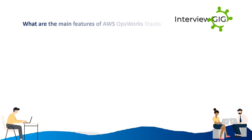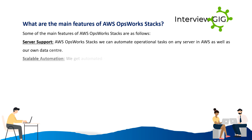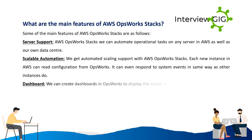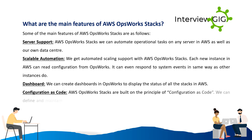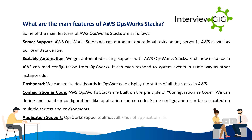Main features of AWS OpsWorks Stacks include: Server Support — automate operational tasks on any server in AWS or your own data center. Scalable Automation — automated scaling support where each new instance reads configuration from OpsWorks and responds to system events. Dashboard — create dashboards to display the status of all stacks in AWS. Configuration as Code — define and maintain configurations like application source code, replicable across multiple servers and environments. Application Support — OpsWorks supports almost all kinds of applications, making it universal.